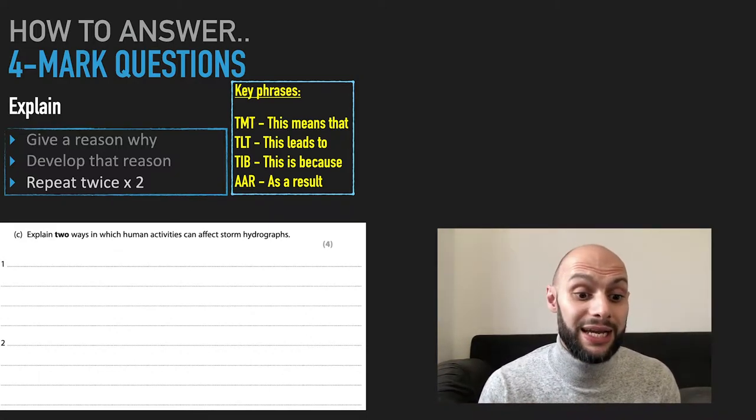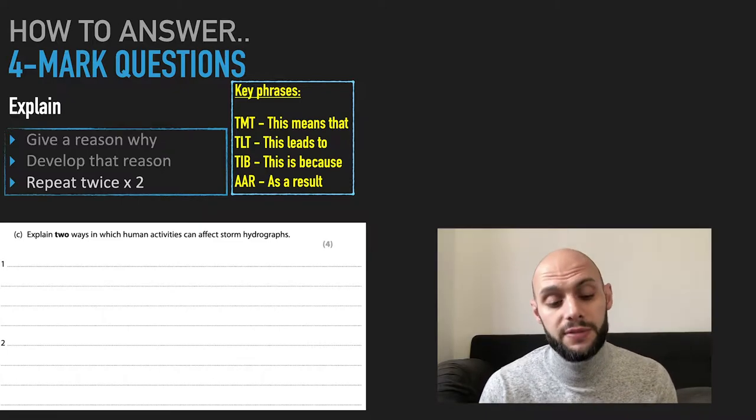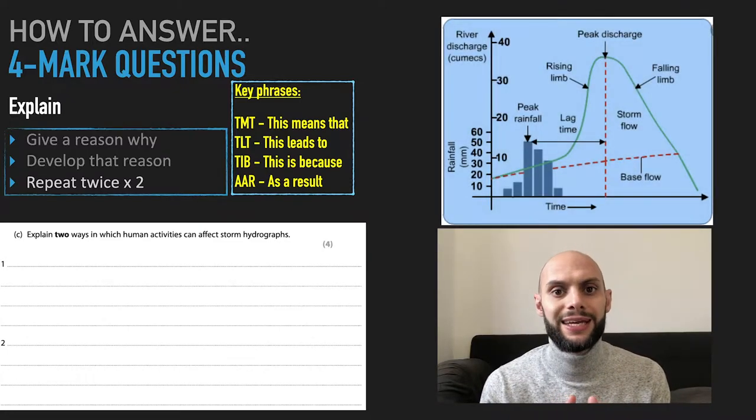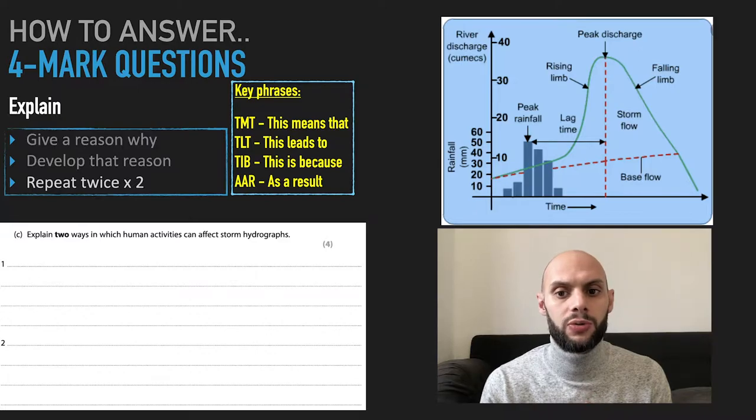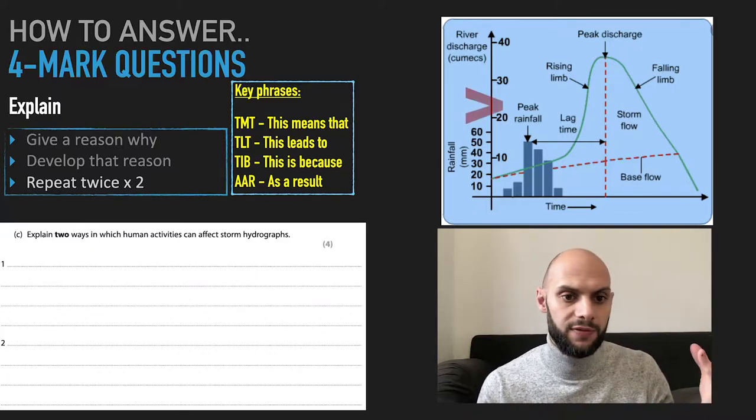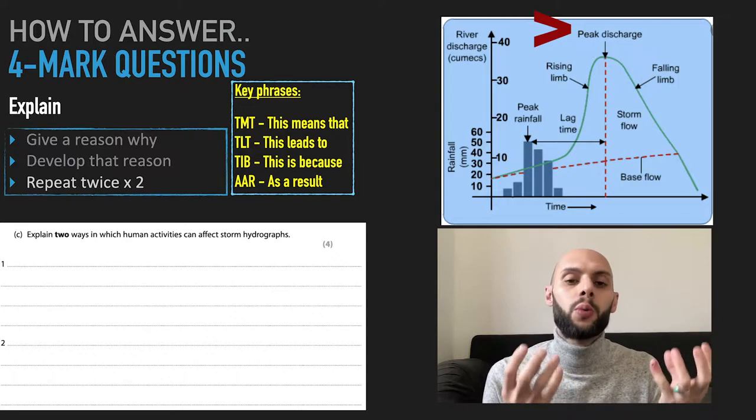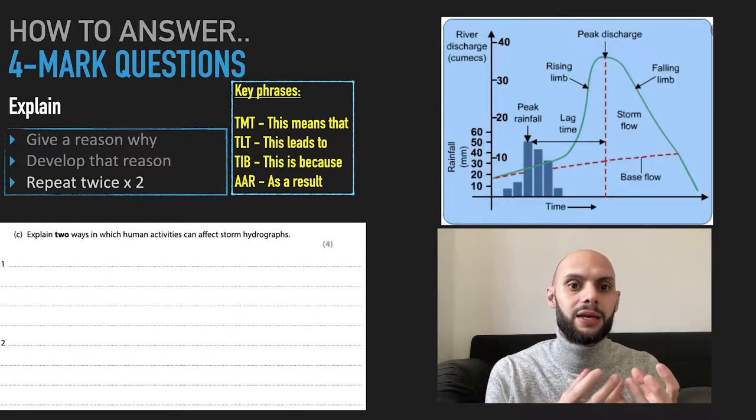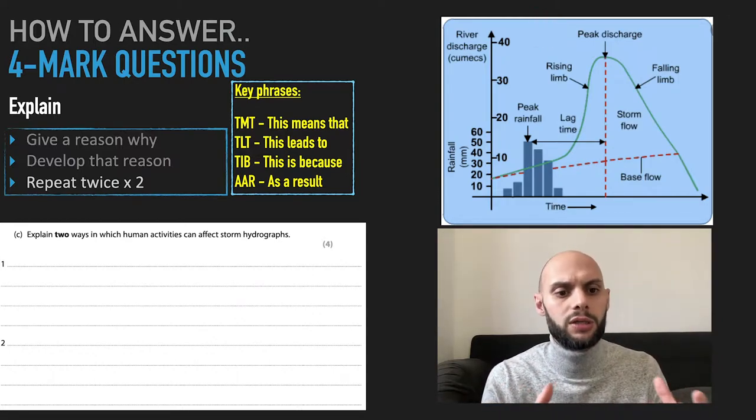Let's have a look at this question. Explain two ways in which human activities can affect storm hydrographs. Well, a storm hydrograph is a graph which shows how quickly rainfall goes into the river. We want this process to be somewhat slow.